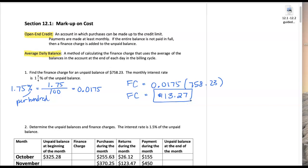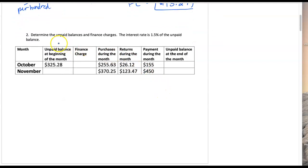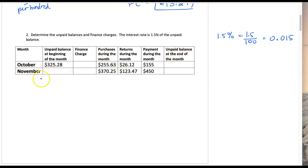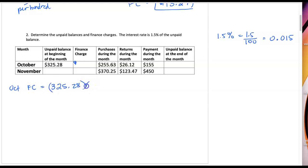Let's try question two. We have an unpaid balance and need to find the finance charge. This time the interest rate has changed to 1.5% of the unpaid balance. Let me write 1.5% and change that to 1.5 per 100, and as a decimal that would be equivalent to 0.015. Let's go across October and then we'll work across November. The unpaid balance at the beginning of the month is $325.28, and then we're going to calculate the finance charge.